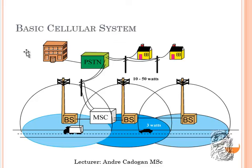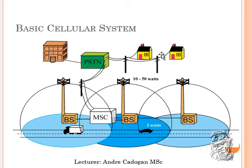Looking at this basic cellular structure, we can see that the PSTN — the public switching telephone network — is connected to the analog system, buildings, and households. The mobile switching center, MSC, is connected to the PSTN to get from mobile telephone systems into the analog systems, connecting to businesses as well as residential homes.